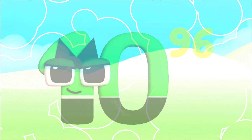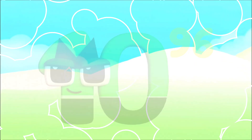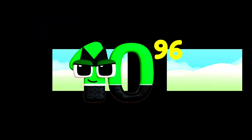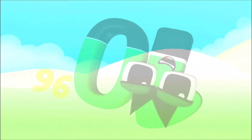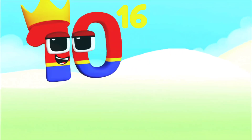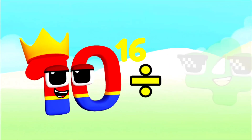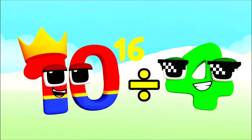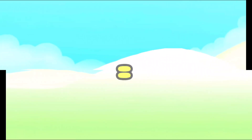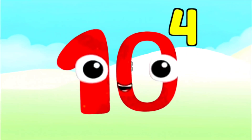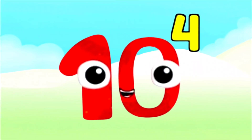1 Tredecillion! 10 Quadrillion — divide it into 4! Equals! I'm 10,000 and I've got 4 zeros!